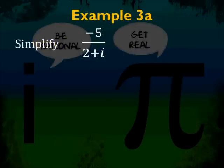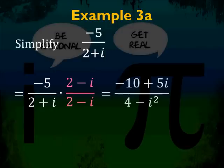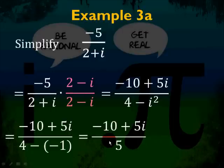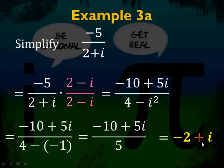Example 3a: simplify the quotient negative 5 over 2 plus i. The conjugate of 2 plus i is 2 minus i, so multiply the top and bottom by 2 minus i. The numerator becomes negative 10 plus 5i and the denominator becomes 4 minus i squared, which equals 5, since 2 squared plus 1 squared equals 5. Simplify by splitting into two fractions and you end up with negative 2 plus i. When you have a complex number in the denominator, multiply by the conjugate and simplify all the way into a plus bi form.